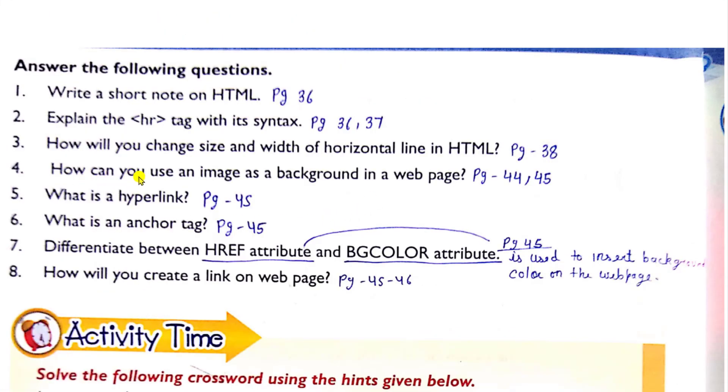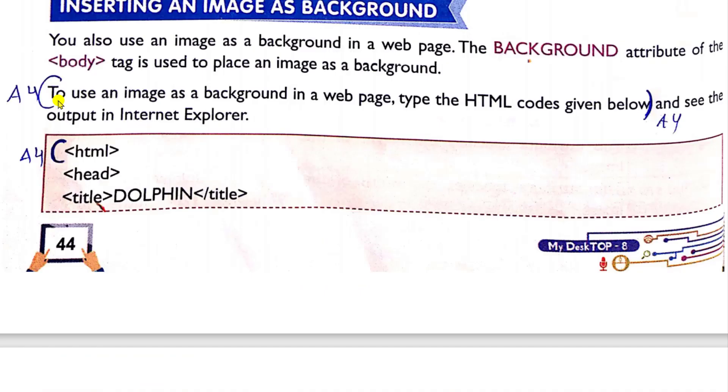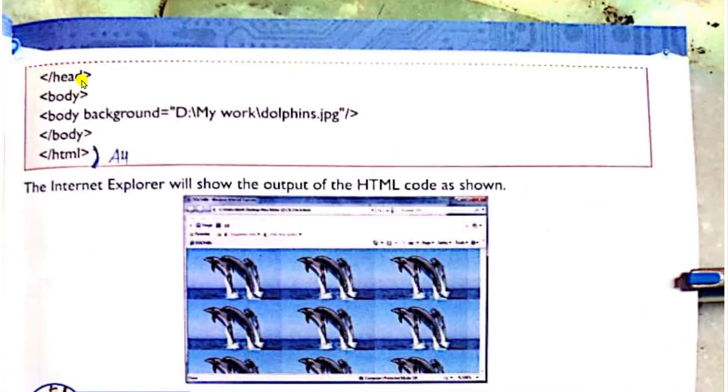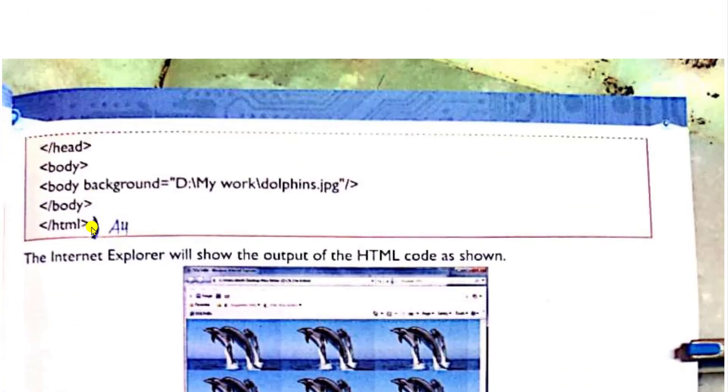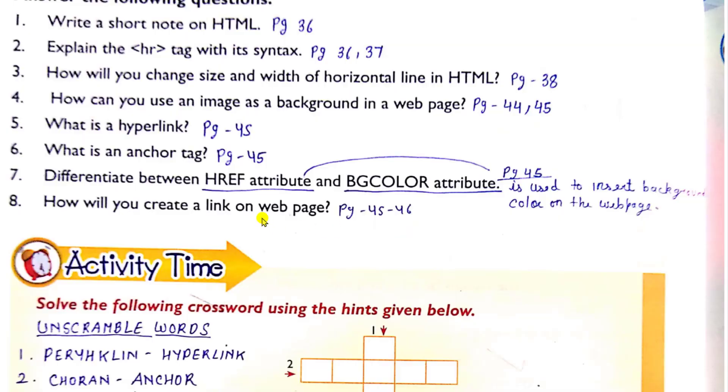Question four. How can you use an image as background in a web page? So this answer is on page number 45 and 44 both. To use an image as a background in a web page, type the HTML code given below. Start from here. All lines you have to write. Then continue till here. This is your complete answer fourth. Start from this till this one. Then start this one and till this one. Write as it is.